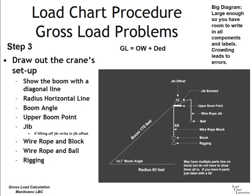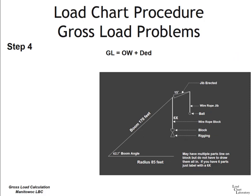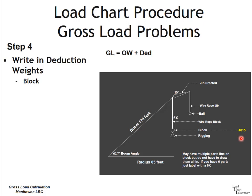Once your diagram is drawn out, step four is to write in your deduction weights. For the Manitowoc, the weights for most lifting accessories will be provided in the data table that goes with the problem — you'll be given the weight of the block, the rigging, and the ball. The only item you'll have to look up is the weight of the jib, which is found in a table in the load chart notes showing deduction weights for the different jibs.